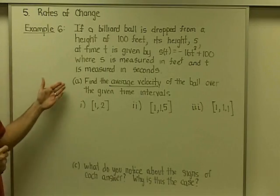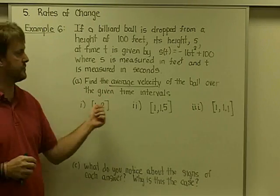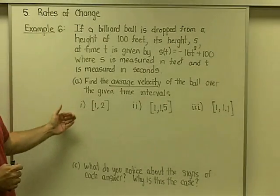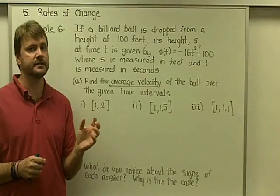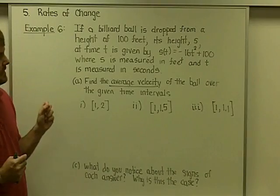Our job for part A is to find the average velocity of the ball over the given time intervals, and we have three different ones to look at. Now, I want you to understand that this initial problem has absolutely nothing to do with calculus. This is a problem that you could have conceivably seen in an algebra class.